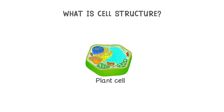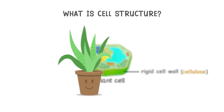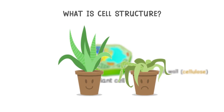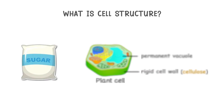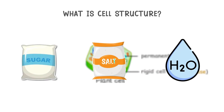Now let's talk about plant cells — they come with a few extra components. First up, the rigid cell wall, composed of cellulose, which gives the plant its support and structure. Without it, they might burst from too much water. Plant cells also contain a permanent vacuole — a handy sack filled with cell sap, a mixture of sugars, salt, and water that the cell uses as needed.